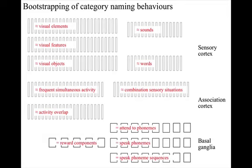Within this architecture that we described and developed in the last section, let's think in general terms about how genetic information could guide the receptive field definitions and the behavioural components.